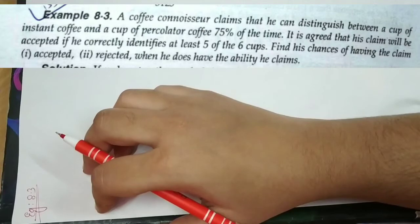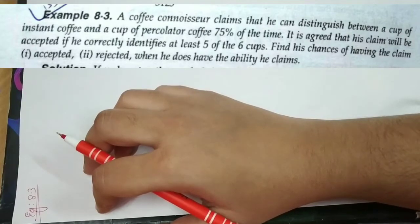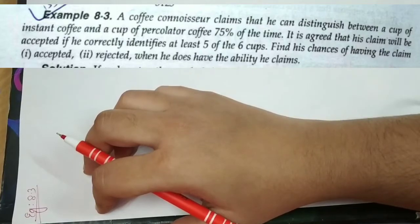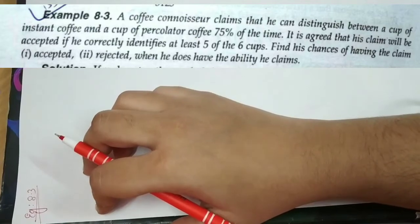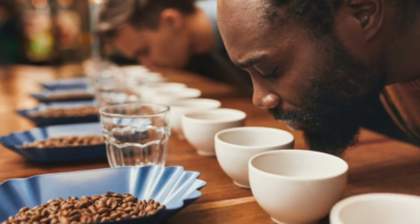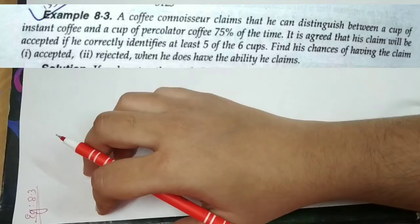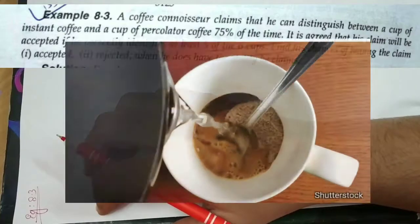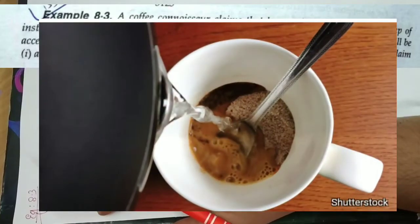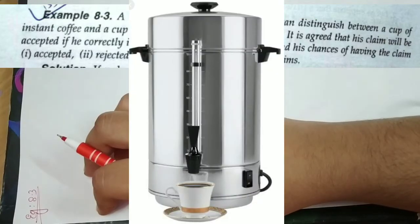This question says a coffee connoisseur can now claim that he can distinguish between a cup of instant coffee and a cup of percolator coffee 75% of the times. This means that a coffee expert claims that 75% of the times he can tell which coffee is instant coffee and which coffee is percolator coffee.